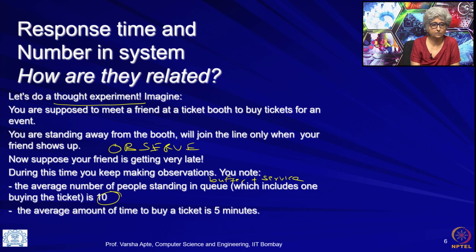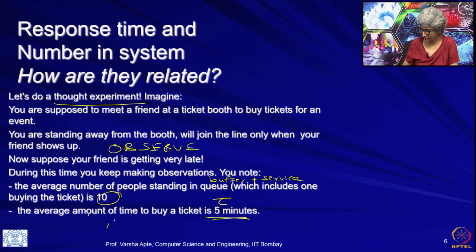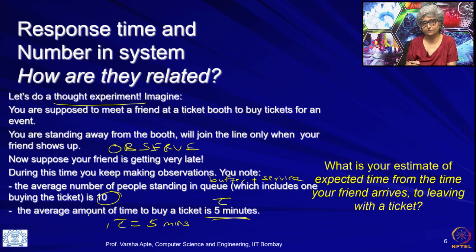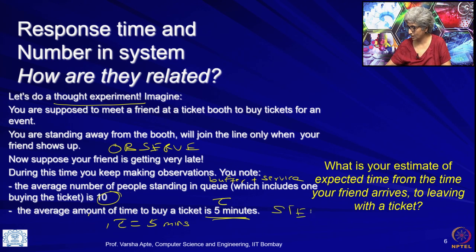It is like a GG1/9 system with tau equal to 5 minutes. Now, given all of this observation, what is your estimate of the expected time from when your friend arrives — when you join the queue — to the time you leave the booth with the ticket? We assume steady state, so nothing changes about the system.